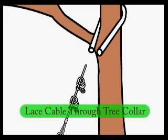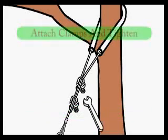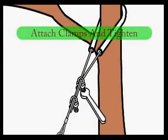The last step is to feed the cable through the protective tree collar and around the tree limb. Then attach the supplied wire rope clamps and tighten.